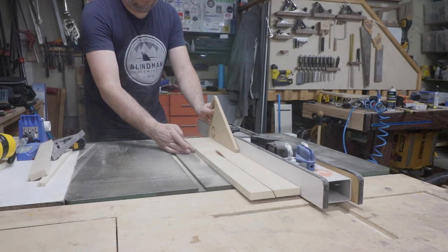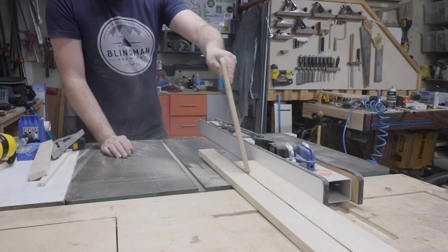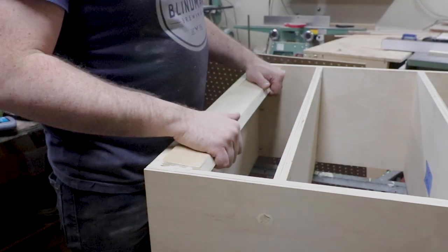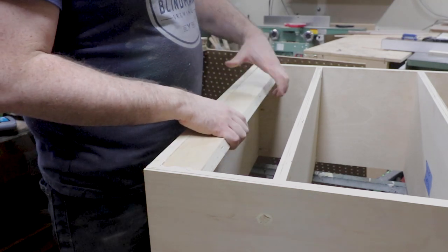With the cabinet more or less together, I could start thinking about how to mount it to the wall and I went with a French cleat system. And yes, in this shot you can clearly see me putting the French cleat on for the first time backwards.